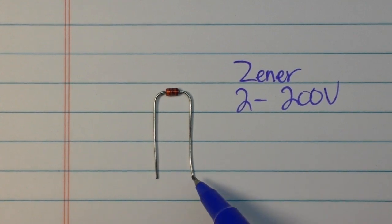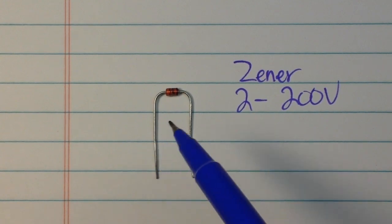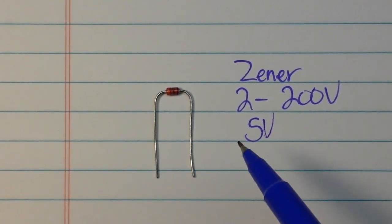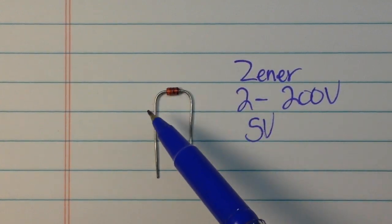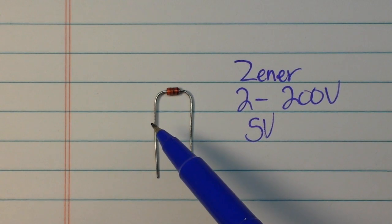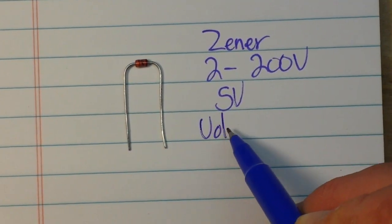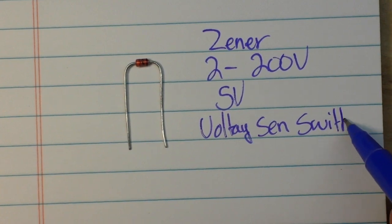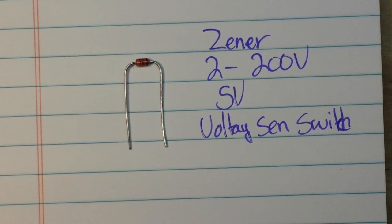When you back feed them, reverse bias them, bring the current in through the cathode and pass it out through the anode, when you reach that Zener voltage - in this case this is a five volt Zener - when you start getting above five volts this will conduct in the opposite direction but only about five volts. So it is able to act like a voltage-sensitive switch.